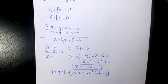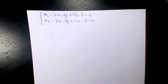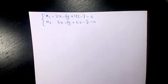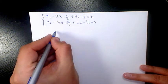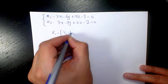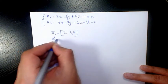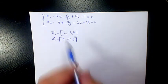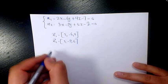The next example: we have 2x minus 6y plus 4z minus 7 equals zero and the other one is 3x minus 9y plus 6z minus 2 equals zero. The normal to the first one is (2, -6, 4) and to the second one is (3, -9, 6). This one is a multiple of the other, which means we are dealing with parallel planes.